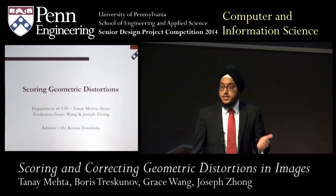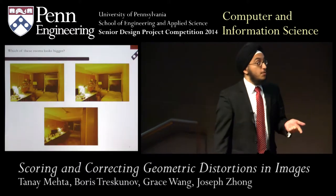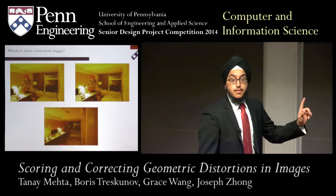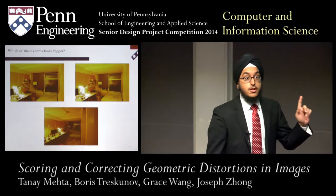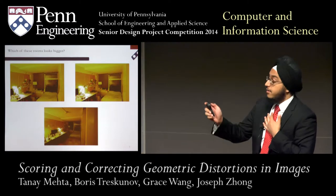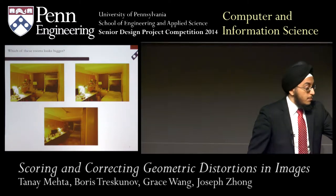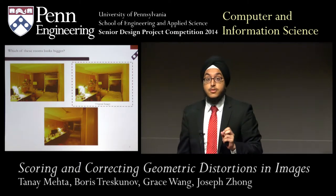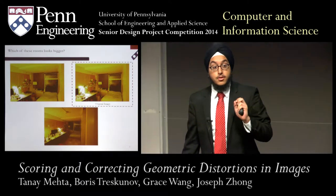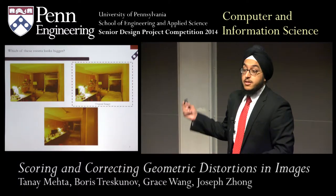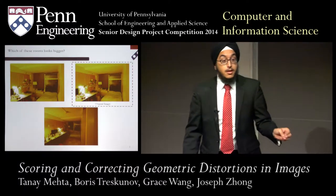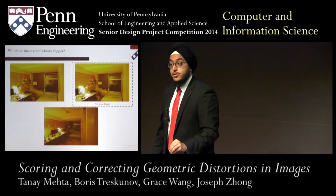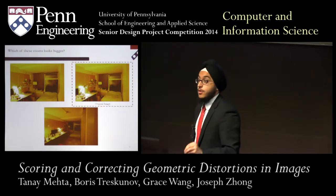The three images behind me were taken by the same person standing in the same room with the same camera from the same place, yet they all look significantly different. The one at the top right is most representative of what a human would see, while the other two have been distorted using computer vision techniques to make the room look bigger. This is a common problem in subletting and real estate online — people exaggerate images to fool potential tenants.